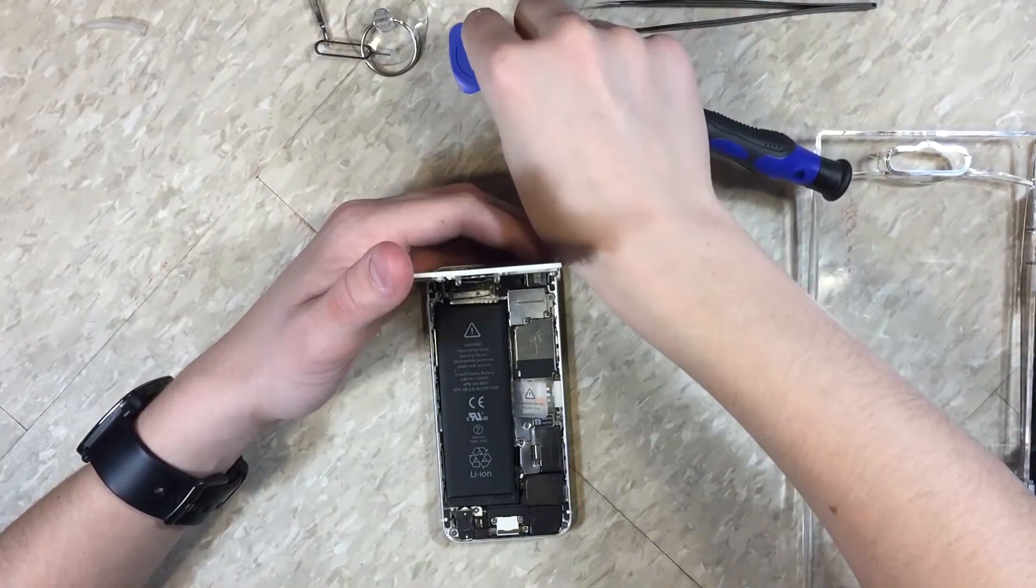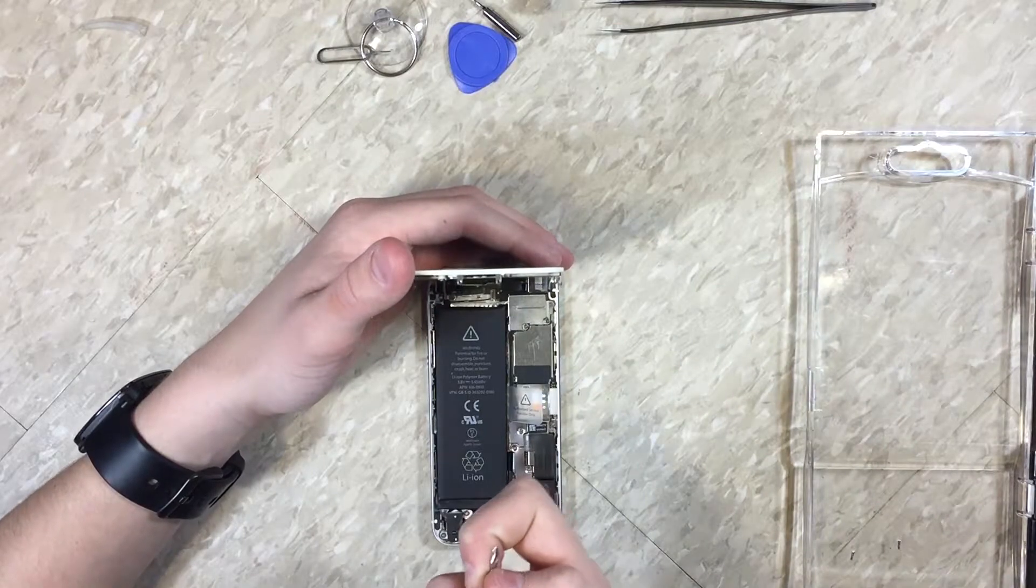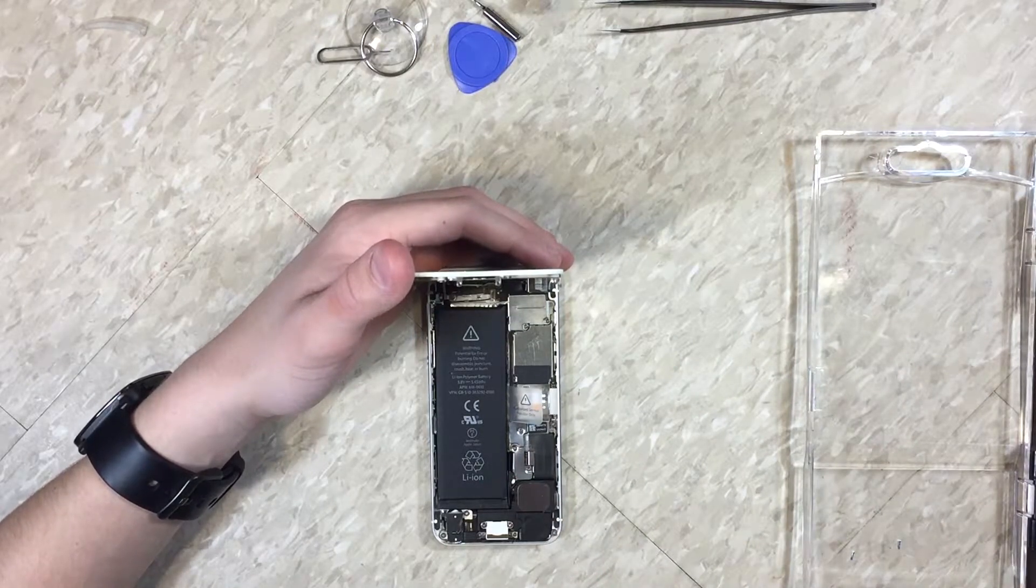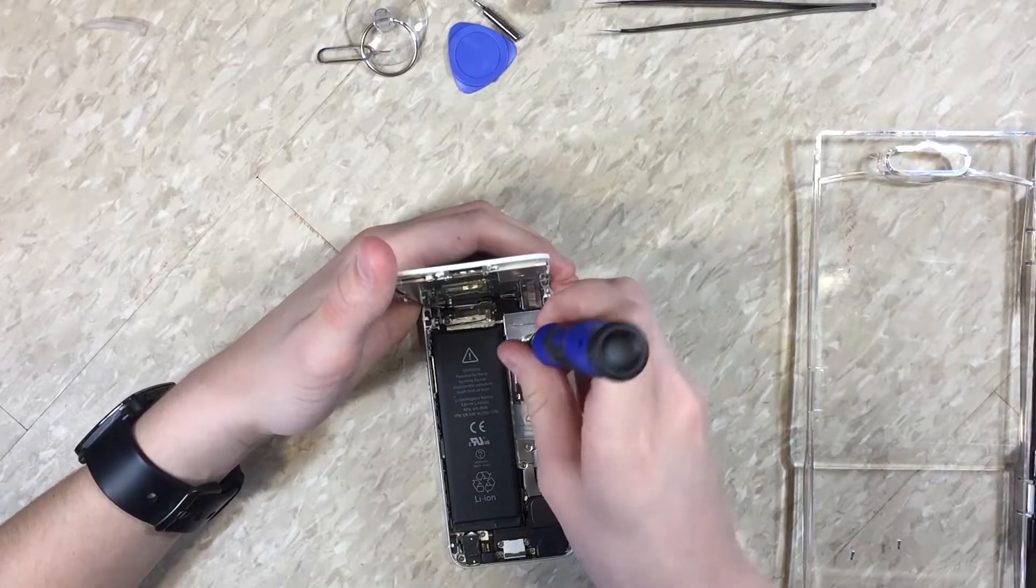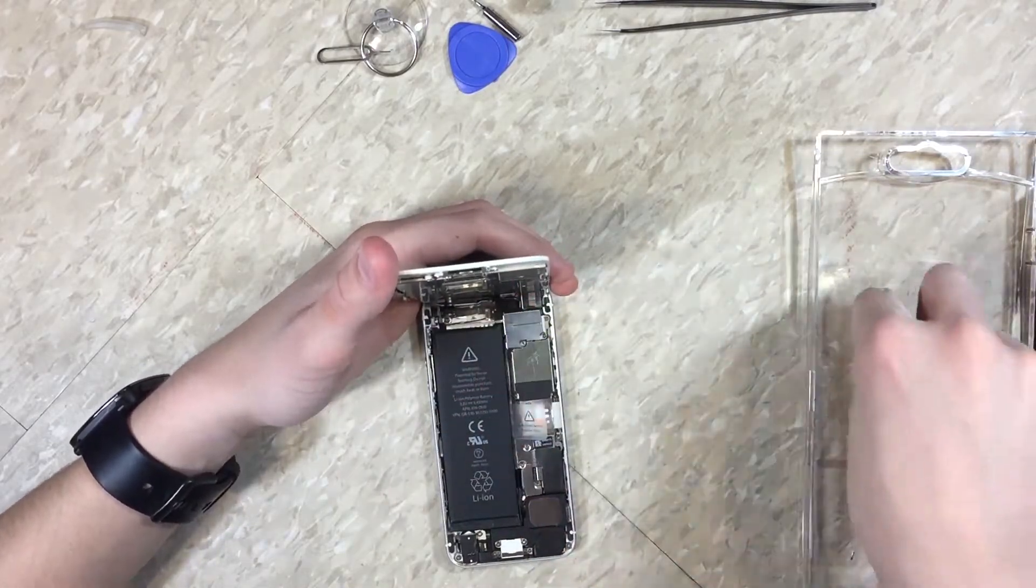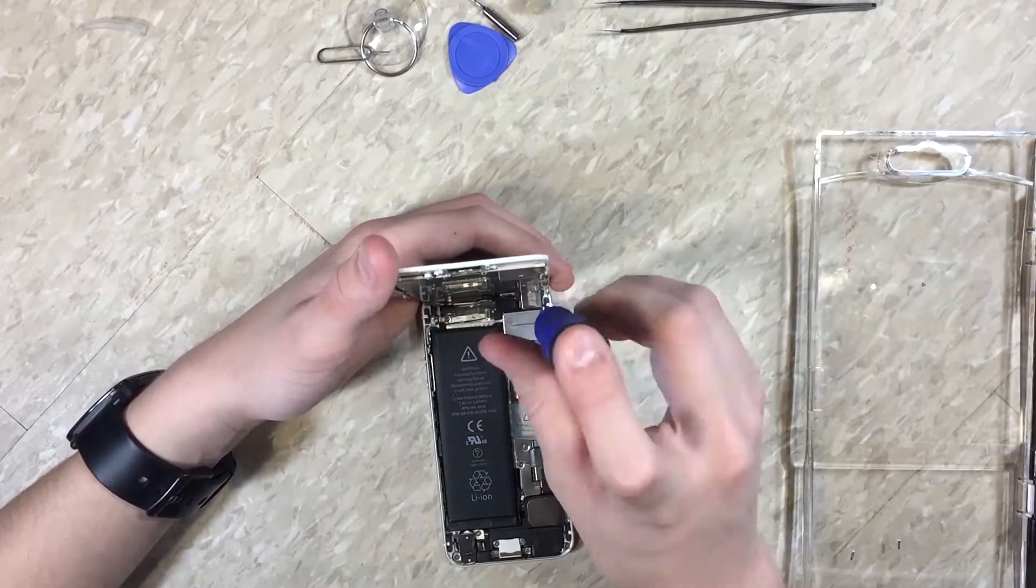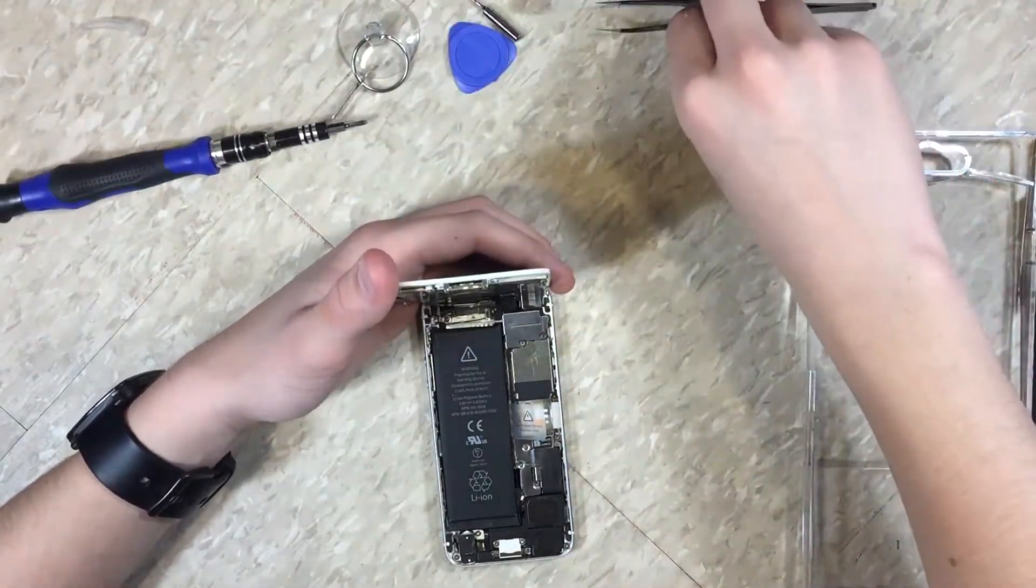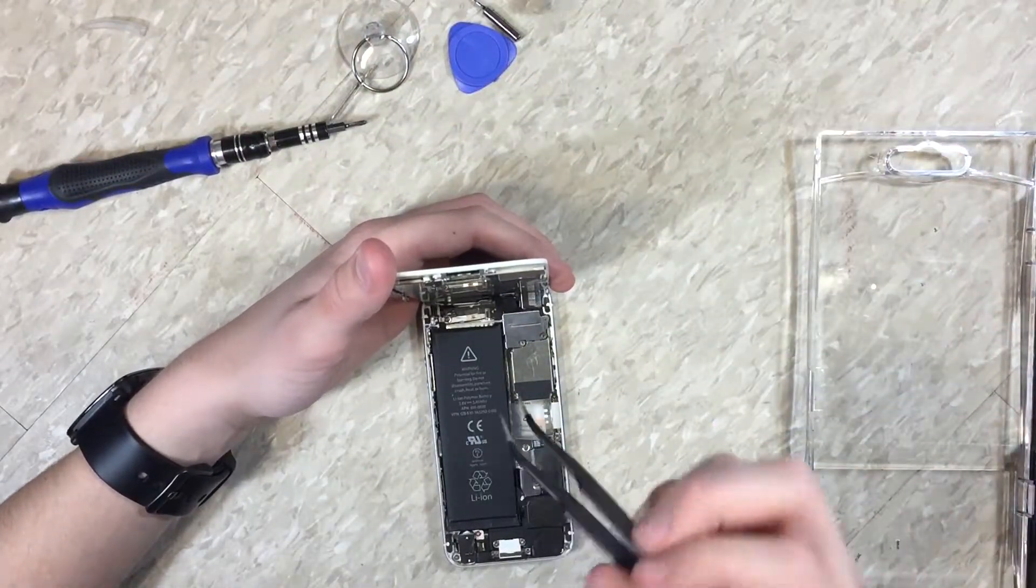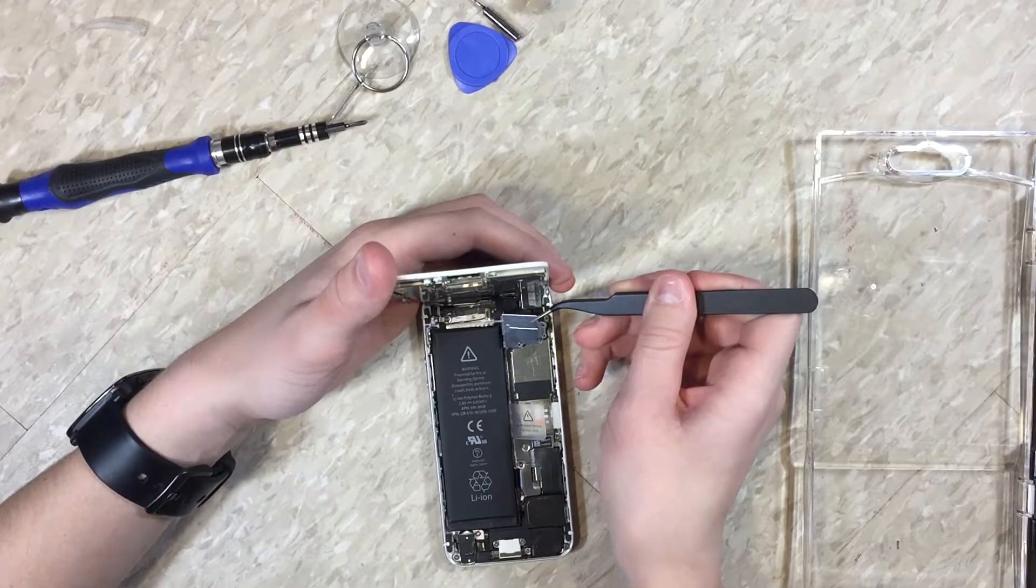You're going to change your drill bit to the Phillips 1.0, and you're going to take out these three screws right here. Once that is out, you can go ahead and take your little snips here, and just take it out.